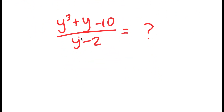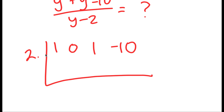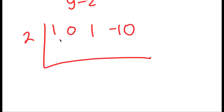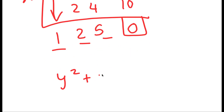To do this, I'm going to use synthetic division, looking at the coefficients of my numerator. I have 1 as the coefficient of y cubed, 0 as the coefficient of y squared (because there is no y squared term, we put a 0 as a placeholder), 1 as the coefficient of y, and negative 10. Using 2: bring down the 1; 2 times 1 is 2; 0 plus 2 is 2; 2 times 2 is 4; 1 plus 4 is 5; 2 times 5 is 10; negative 10 plus 10 is 0 — remainder 0. The resulting coefficients give y squared plus 2y plus 5.